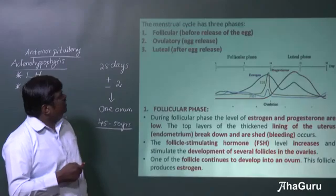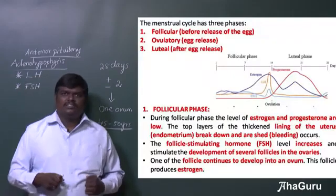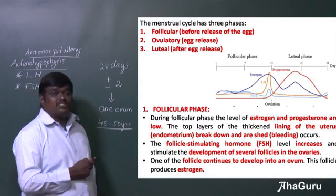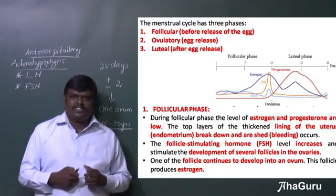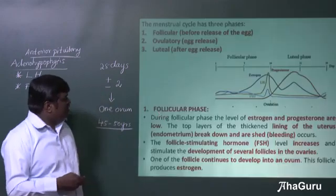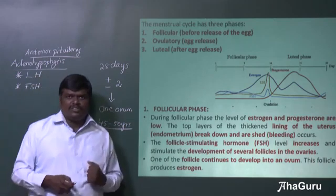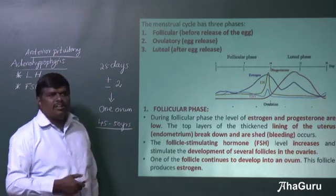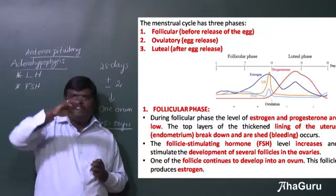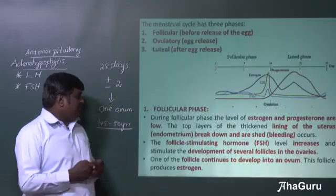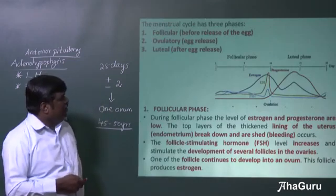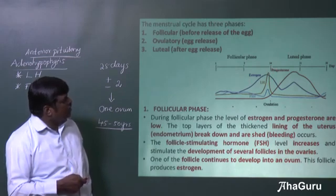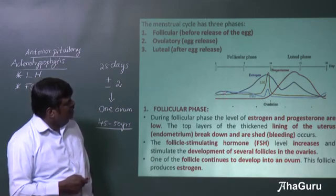There are three phases in the menstrual cycle: the follicular phase, the ovulatory phase, and the luteal phase. During the follicular phase, the four hormones — luteinizing hormone, follicular stimulating hormone, estrogen, and progesterone — fluctuate. In the follicular phase, estrogen and progesterone levels are low, as you can see here — this is the progesterone level and this is the estrogen level.